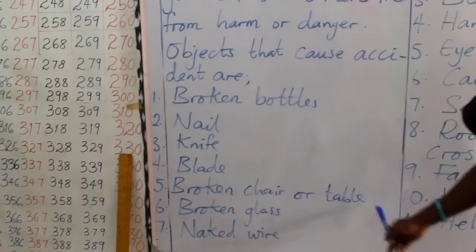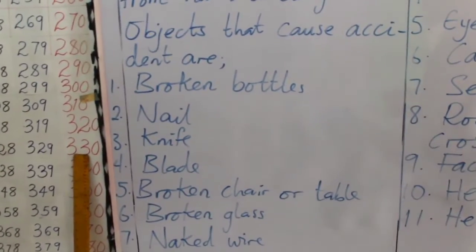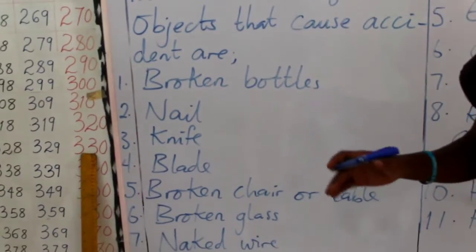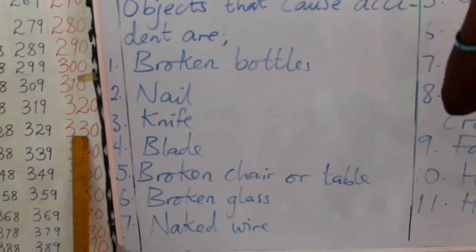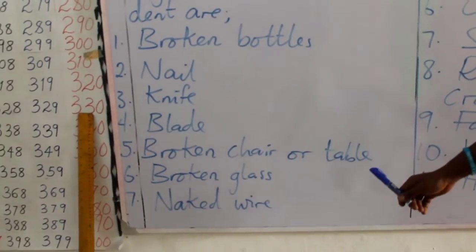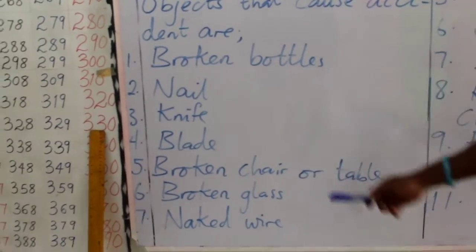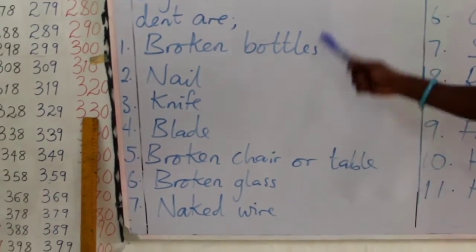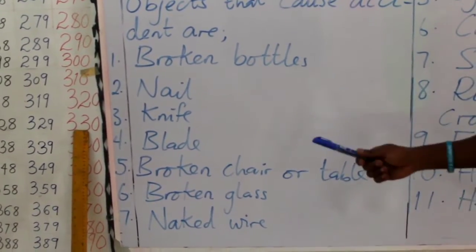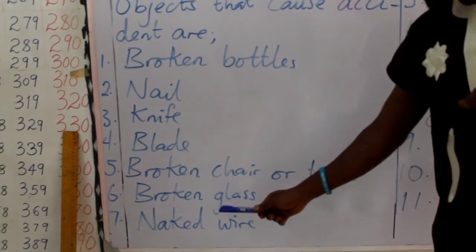The fifth one is broken chairs or tables. Carefully dispose of them, or call your elderly ones to deal with this. Don't play with anything of this nature — they are very dangerous to your health.